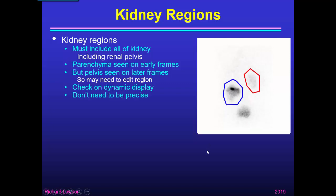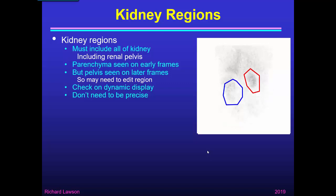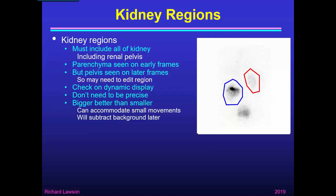The regions don't need to be very precise — they don't need to be nice smooth curves. They can be a series of straight lines, as long as the region includes all of the kidney. We don't need to stick tightly to the kidney boundaries. In fact, bigger is better than smaller.